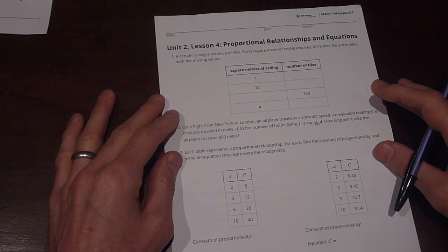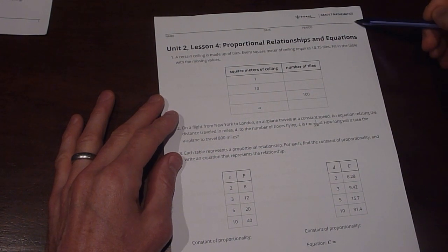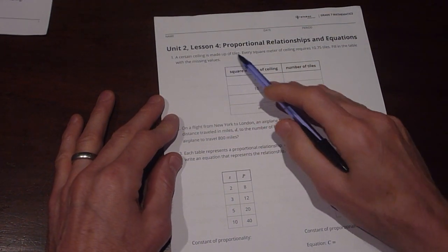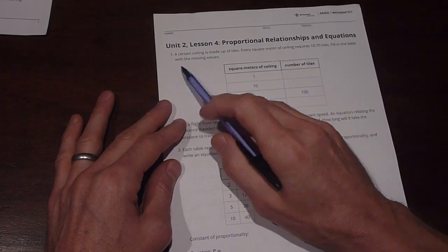Hi, everybody, and welcome back. I'm going to be doing the Open Up Resources, Grade 7, Mathematics, Unit 2, Lesson 4, Proportional Relationships and Equations, Practice Problems. So let's jump in.